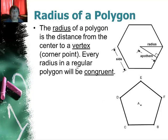The other thing we need to know about is the radius of a polygon, which is the distance from the center to the corner point, to the vertex. Every radius in the polygon will be congruent, so they're all the same length.